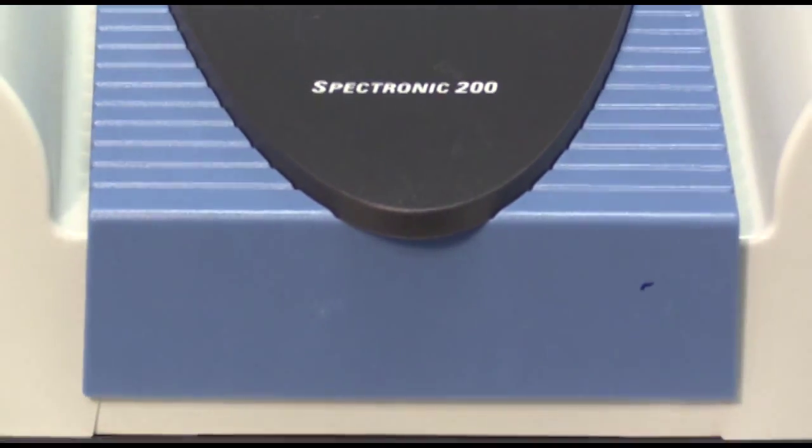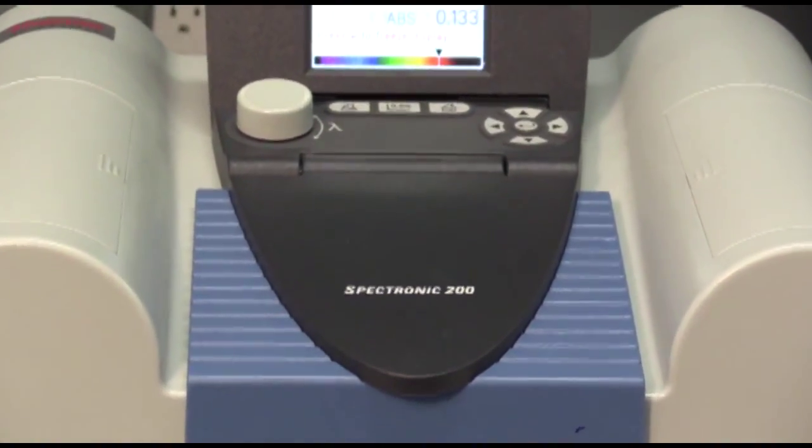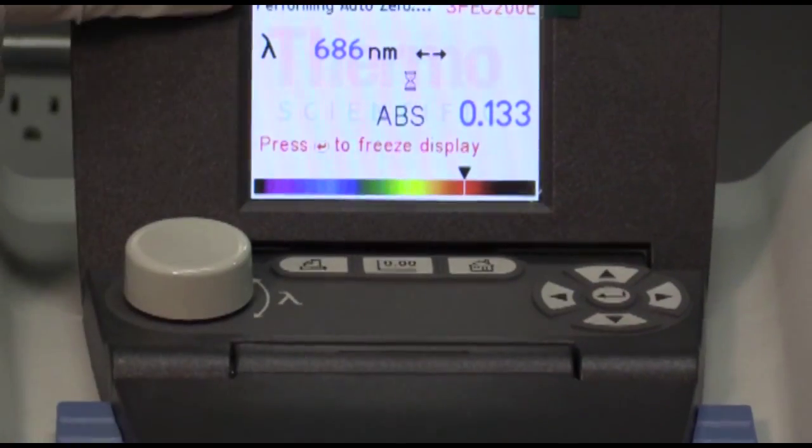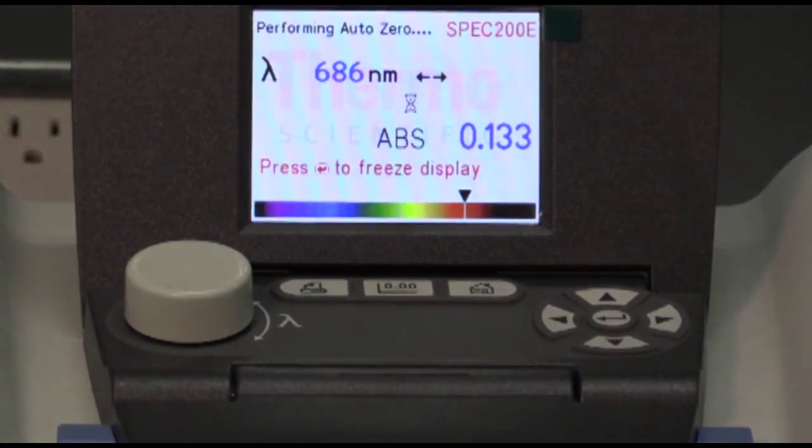This is our blank, so the first thing you want to do is to find the button that says 0.00, which is the blank button. Press it, and the instrument will now say performing auto zero. Wait at this point.